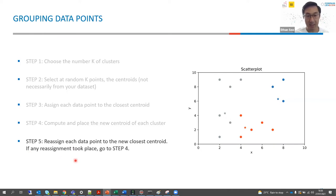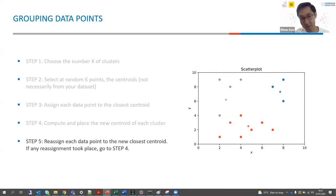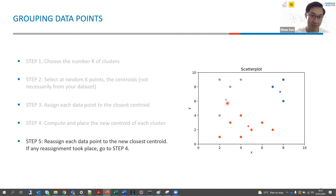If any reassignment of data points took place, we go back to step four. Since these two points changed color, we go back. This is quite an iterative process — we keep doing steps four and five as long as the centroids move and data points are reassigned. Now we see the blue centroid has moved higher, the gray centroid has moved higher as well, and the orange centroid has remained somewhere similar. Moving to step five, two gray points have changed to orange because they are now closer to the orange centroid since the gray centroid moved up.